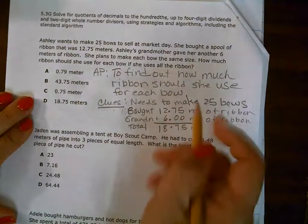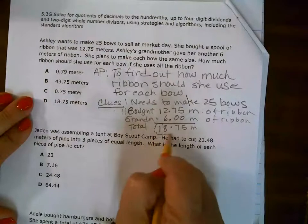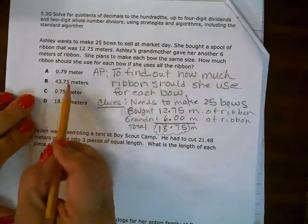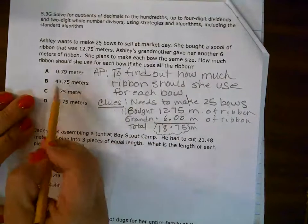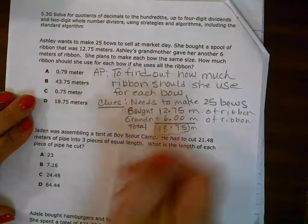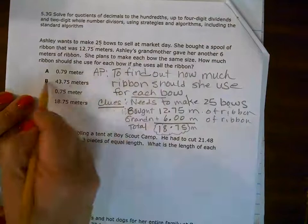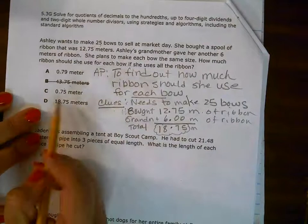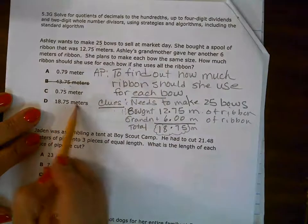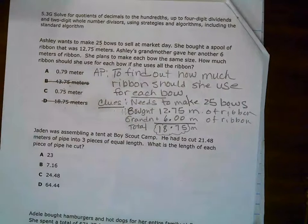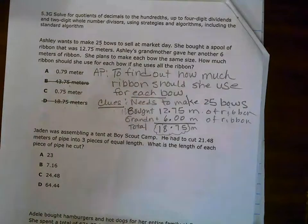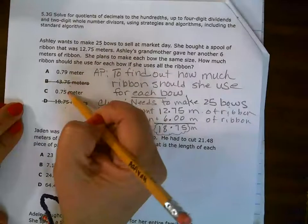To find out how much ribbon she should use for each bow, we're going to need to divide. Now let's take a look at what we have. This is how much ribbon she's got, right? Can she use 43 and 75 hundredths meters of ribbon when she only has this amount per bow? Remember it's going to be for each bow. So we know I can get rid of that one. What about 18 and 75 hundredths? No, that's the amount of ribbon she has. So process of elimination. I can get rid of that one.